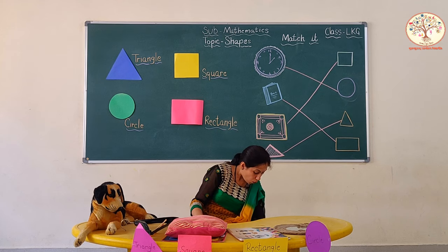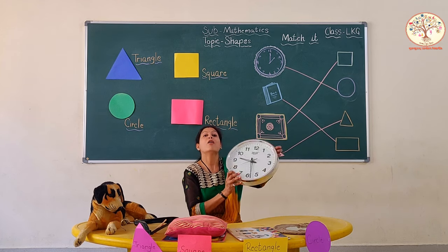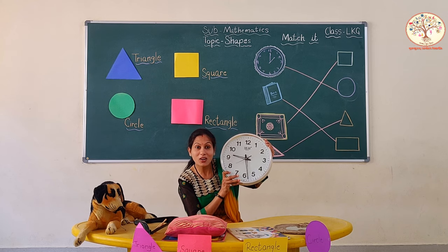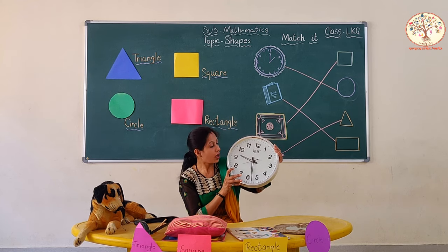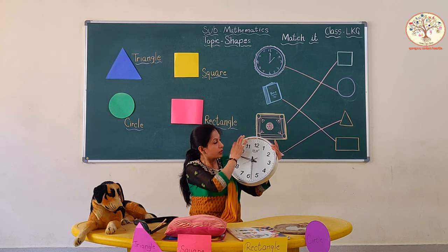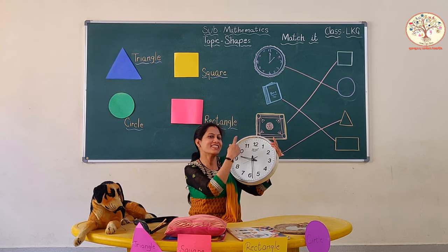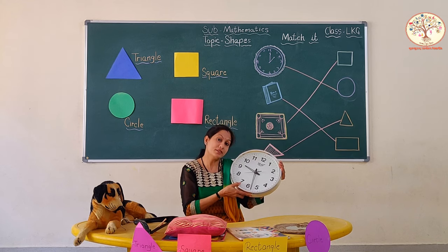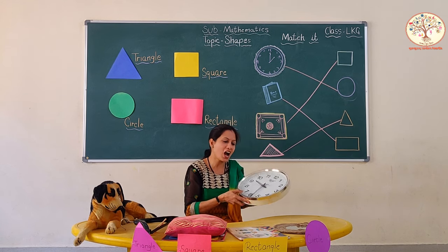Now, what is this? Clock. It tells us time. And what is the shape of a clock? Circle. So, it will go to the circle house.